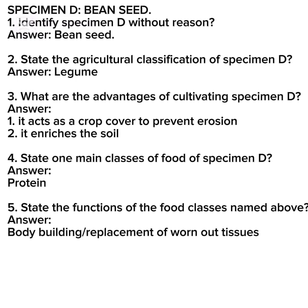Answer: number one, it acts as a crop cover to prevent erosion; number two, it enriches the soil. Question four: state one main food class of Specimen D — answer, protein. Question five: state the function of the food class named above — answer, body building and replacement of worn-out tissues.